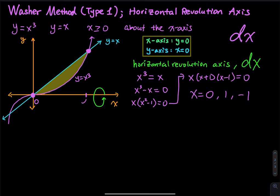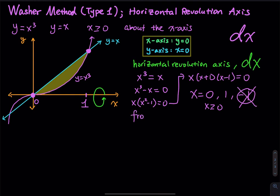The other intersection point is x equals one. There is also an intersection in quadrant three at x equals negative one, but since x must be greater than or equal to zero, we can omit that. So when you set up the dx integral, the integral goes from x equals zero to x equals one.